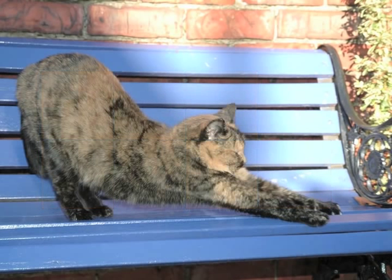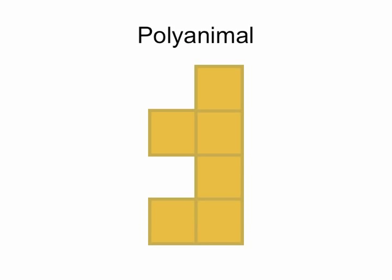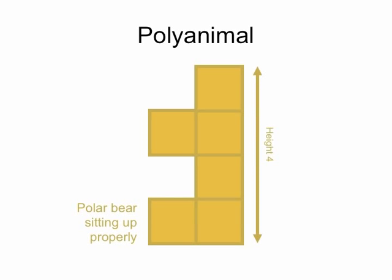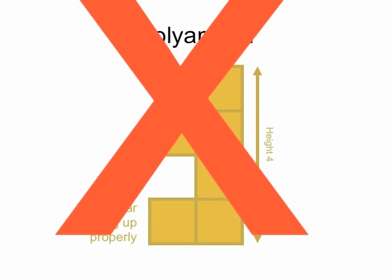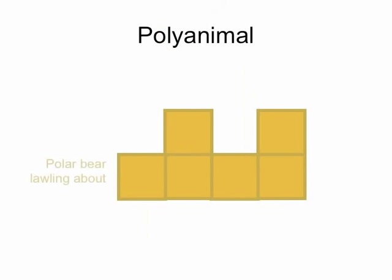Now there was one problem with this technique: he remembered a polar bear sitting up properly, and that polar bear had height four. But whenever he came back to see the polar bear again, the polar bear was lolling on the ground and only at height two. So he thought, I can't remember polar bears in two different ways. I'm not going to remember them whenever they're sitting up; I'm going to remember them whenever they're lolling about like this.